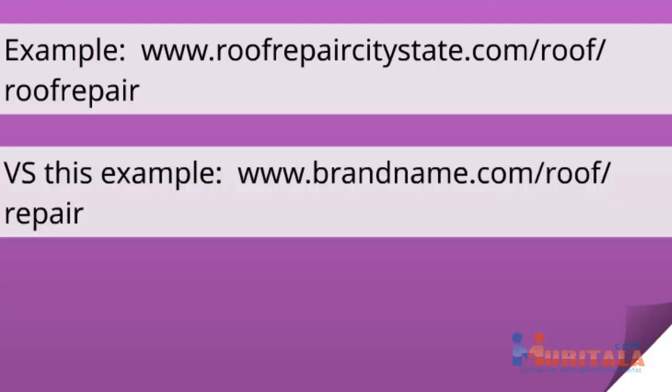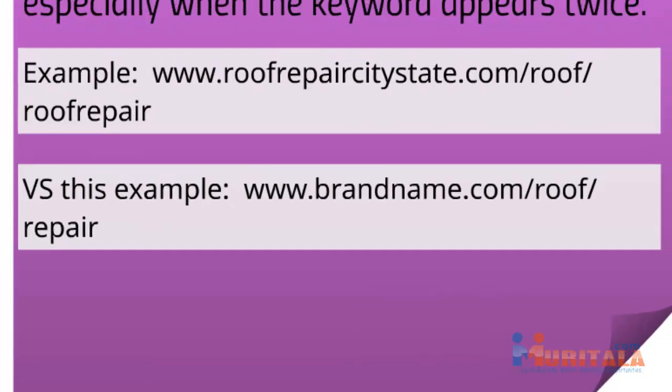Now let's take an example of a brand name. Say the brand name of this roof repair company is called 'The Happy Shingle' or 'The Red Shingle.' If it doesn't have the word 'roof' or 'repair' in it, then it's not keyword spamming. So if it says 'theredshingle.com/roof/repair,' that is nice because it's not repeating the keyword over and over. If in the future Google decides that any type of keyword stuffing in the domain itself can harm you, then you're kind of at a loss with a keyword-stuffed domain. So that's something to keep in mind.